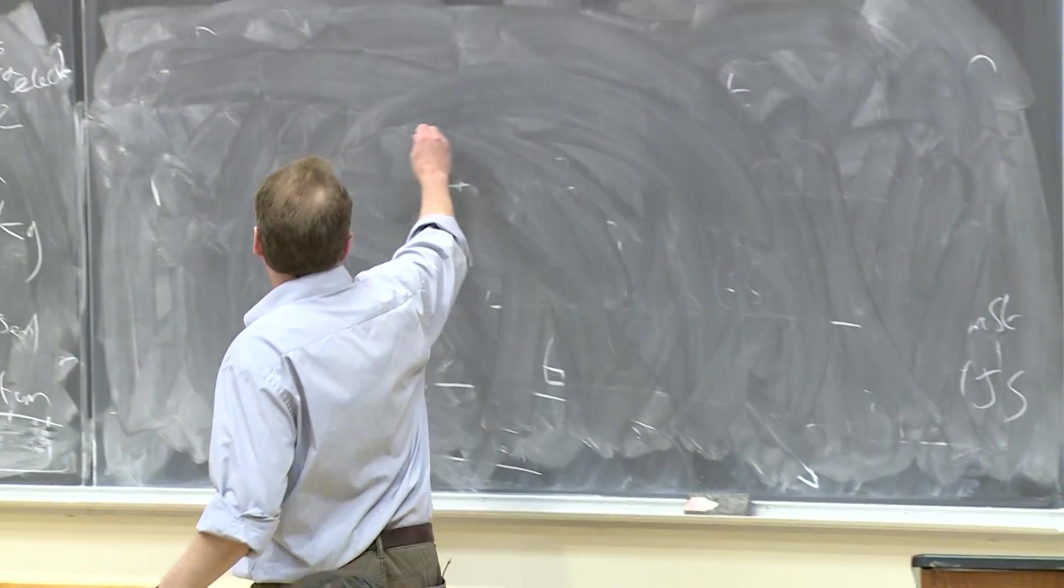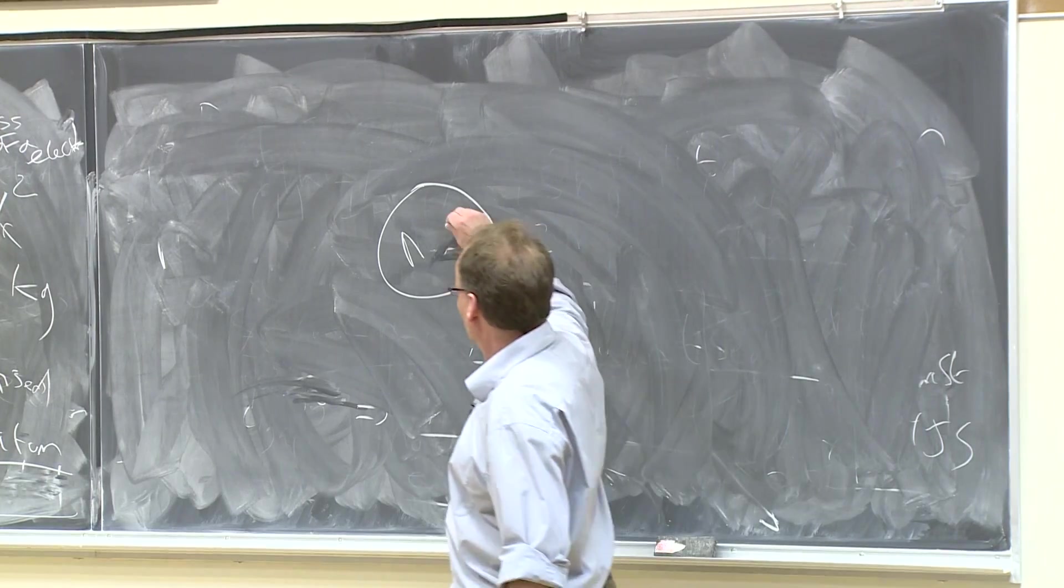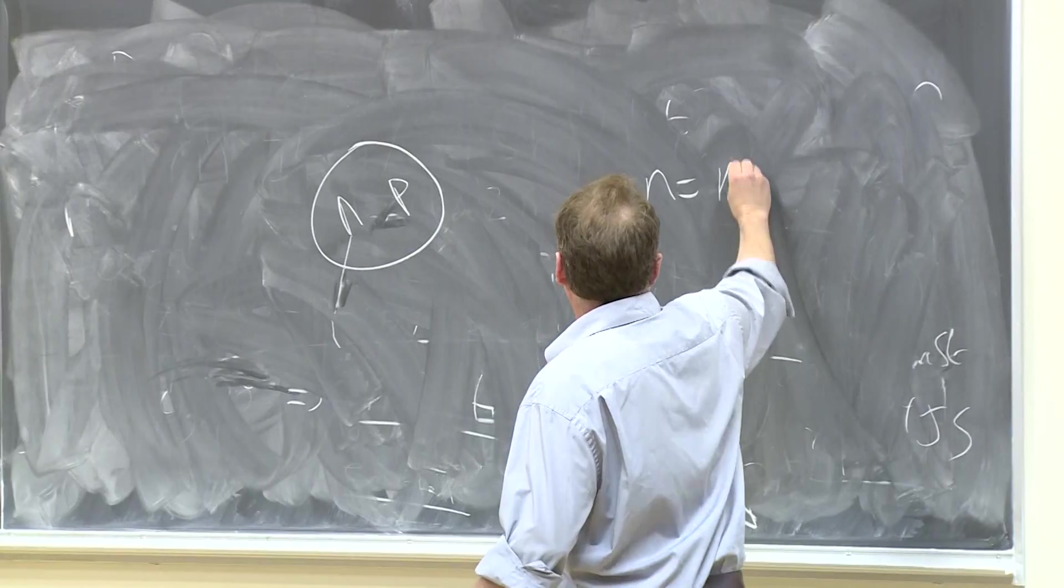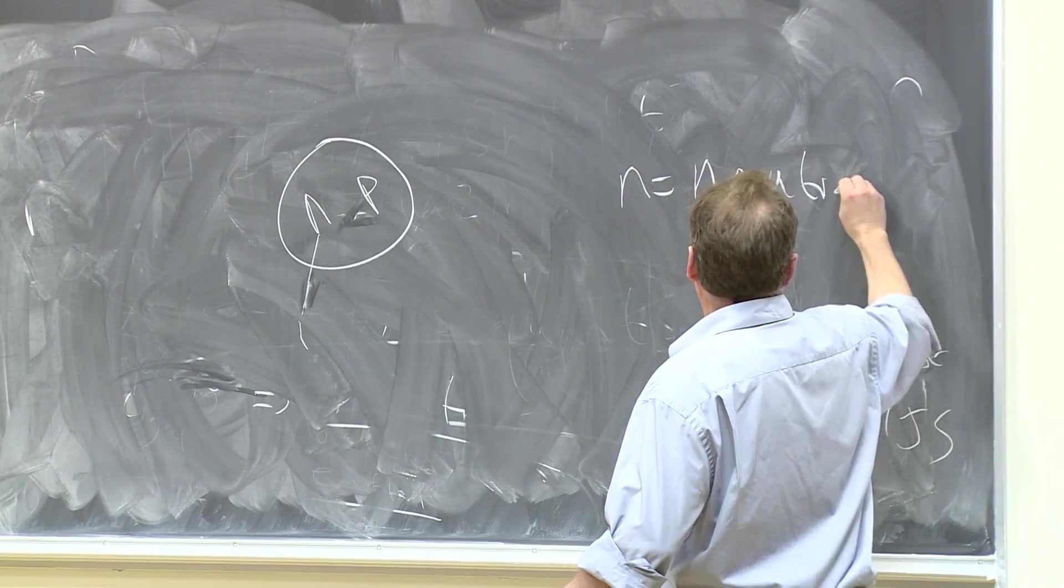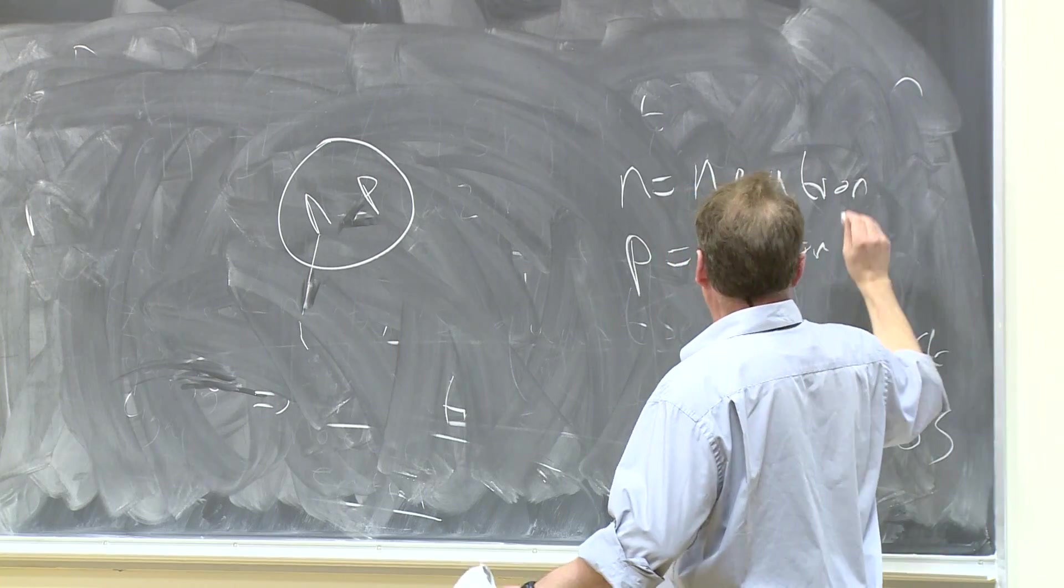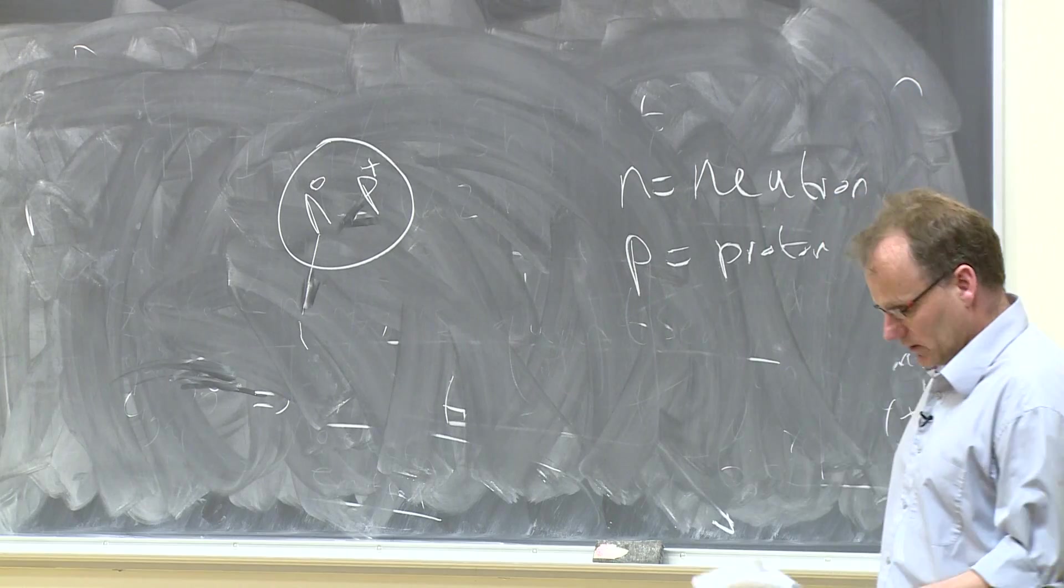So let's just represent an atom, so we remind ourselves. We have neutrons, and we have protons. N is a neutron. P is a proton. Protons have a positive charge. Neutrons don't have any charge. They're neutral.